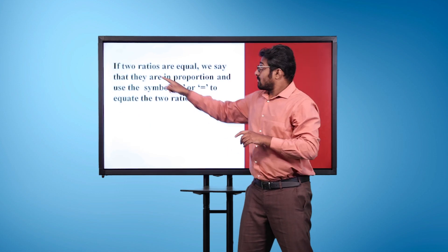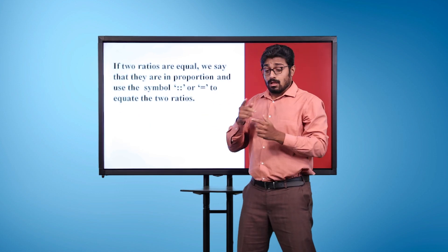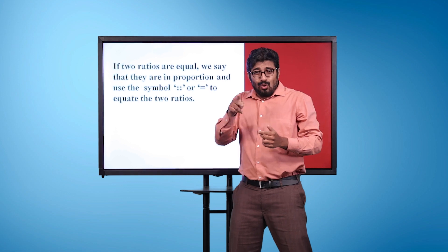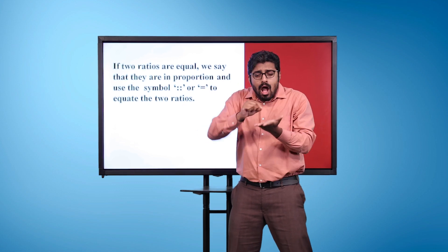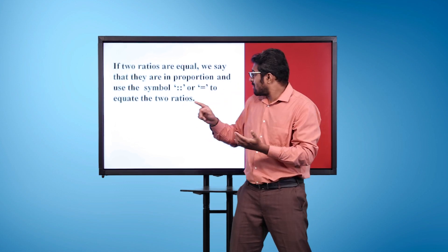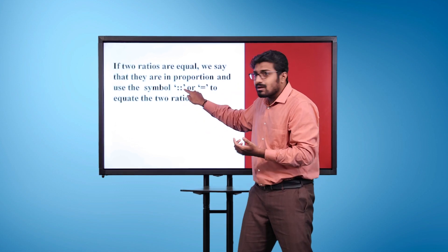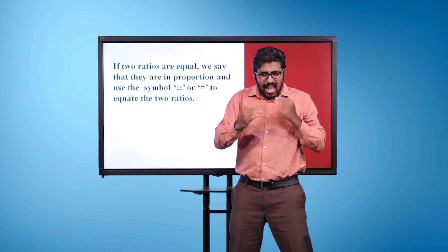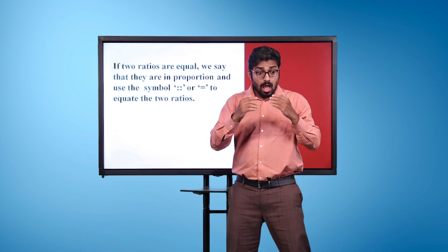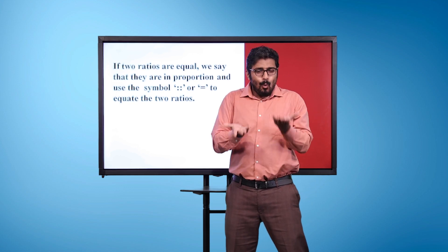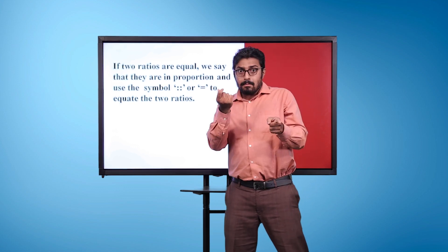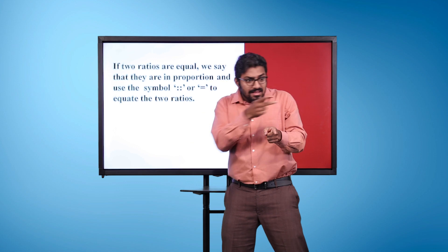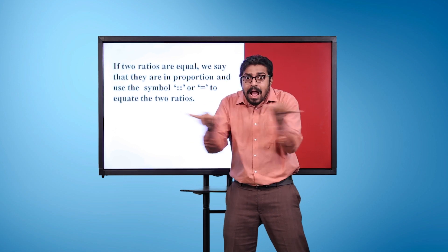If two ratios are equal, we say that they are in proportion and use the symbol double colons or equal to, to equate the two ratios.